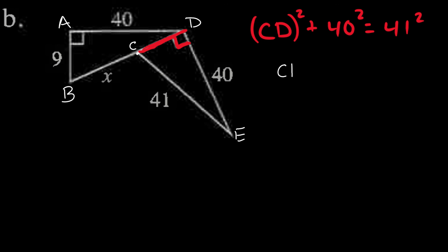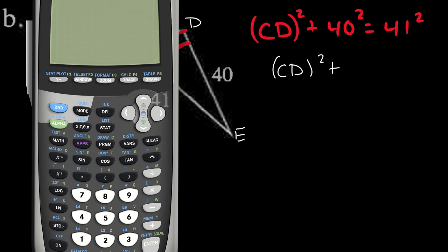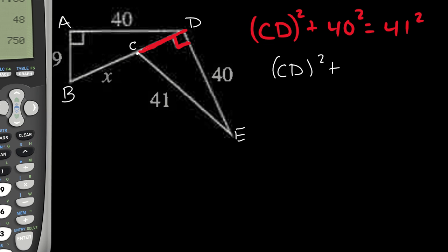Setting out to solve this: CD² plus 40². Let me rearrange this. CD² equals 41² minus 40².